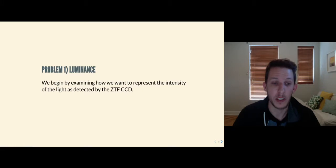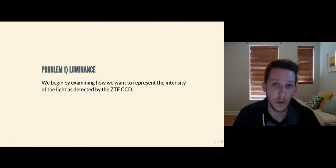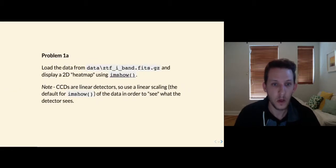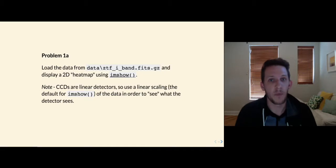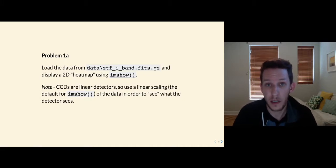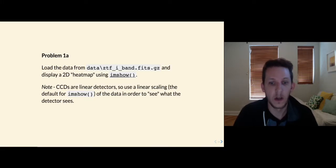For the first problem, I want to talk about luminance — essentially how do we show relative intensity of a CCD image in a way that is meaningful, and how do we pull out the most important and interesting information? We need to load data from the image and display a 2D heat map using IMSHOW. CCDs are linear detectors, so we're going to use a linear scaling as we display the data in the first problem. That's the default for IMSHOW, so you don't have to think about anything particularly difficult there.